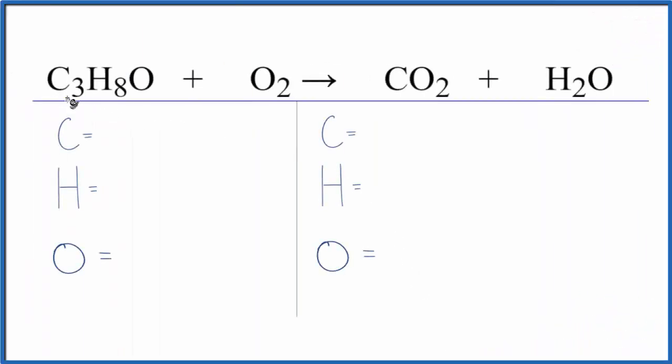In this video we'll balance the equation for C3H8O plus O2. This is a combustion reaction where we have a hydrocarbon and oxygen combining to get carbon dioxide and water. Let's count the atoms first. We have three carbons, eight hydrogens, and one oxygen plus these two, so three oxygen atoms. On the product side we have one carbon, two hydrogens, and two oxygens plus one, so three total oxygen atoms.